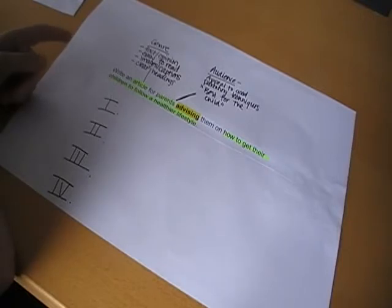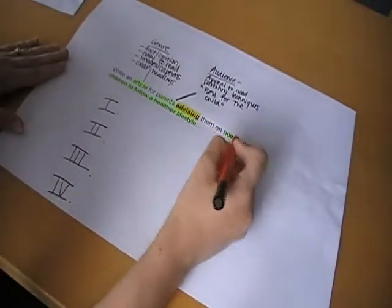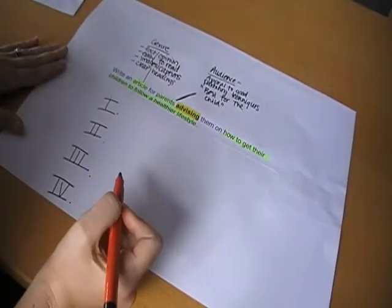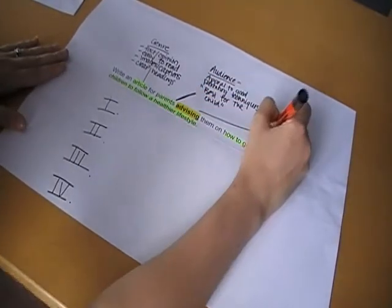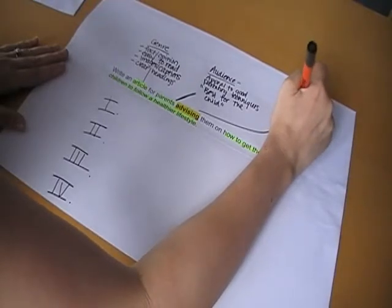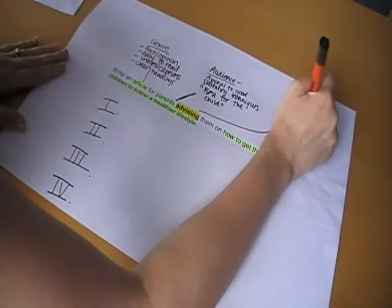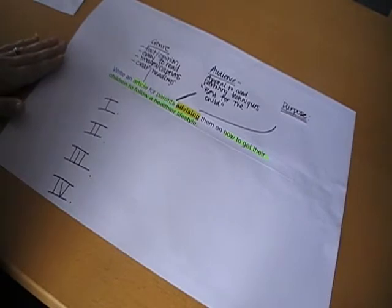The third thing I need to know is the purpose. And the purpose here is how to get their children to follow a healthier lifestyle. And we do that by advising. So my third note over here is my purpose. And I know that I need to do four things whenever I write to advise.